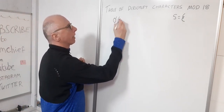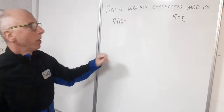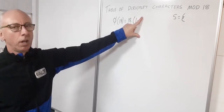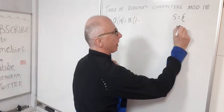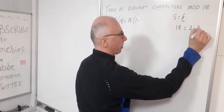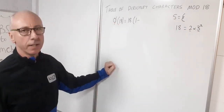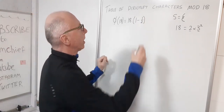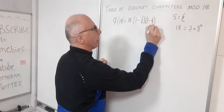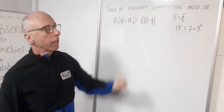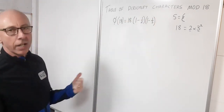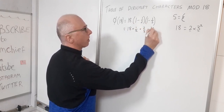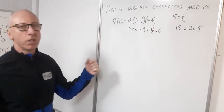So here we've got modulo 18. Going straight in with the formula: 18 times (1 minus 1/2) times (1 minus 1/3). The prime factorization of 18 is 2 times 3 squared, so 2 and 3 are my prime factors. This gives us 18 times 1/2 times 2/3, which equals 36 over 6, which equals 6. So I know there are six elements in this set.